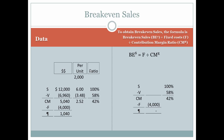So, how does break-even analysis work? Here we have our grid, and we're going to look at the formula. To obtain break-even sales, the formula is: break-even sales (BE^S) equals fixed cost divided by the contribution margin ratio. From the grid, we need the fixed expenses and the contribution margin ratio. Break-even sales equals $4,000 in fixed expenses divided by the contribution margin ratio of 0.42. When doing this division, we convert the percentage to 0.42 in order to calculate the math.